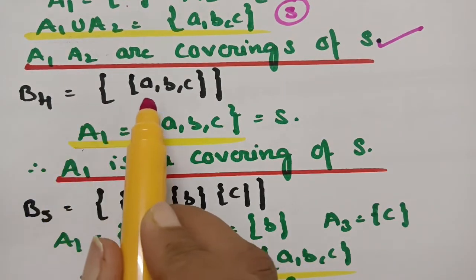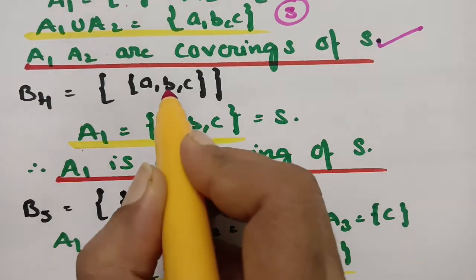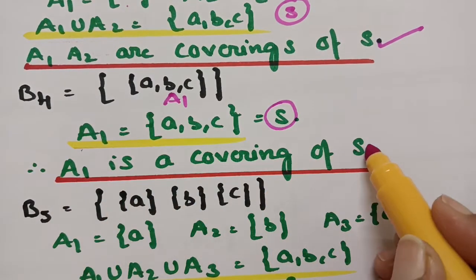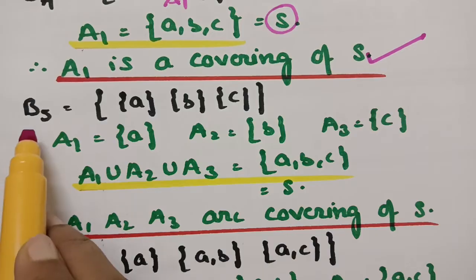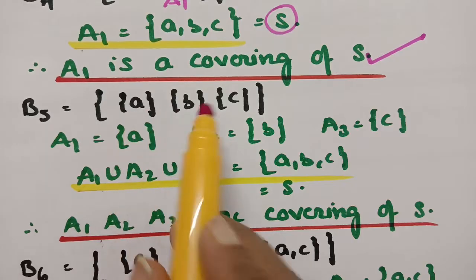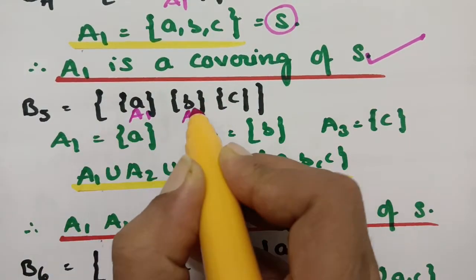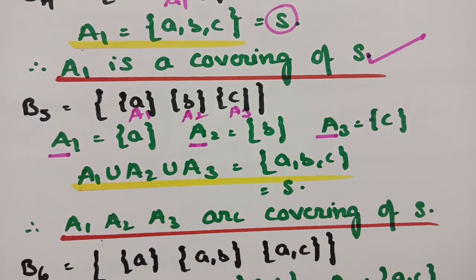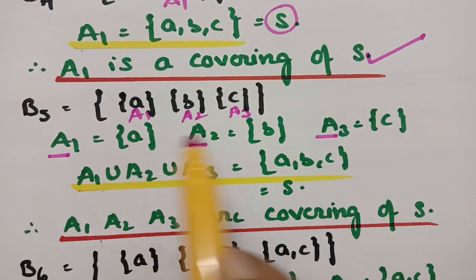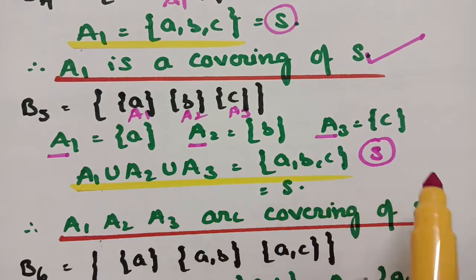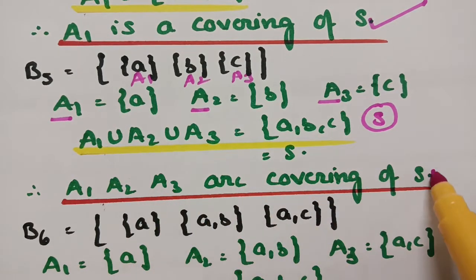Coming to B4: this is a single subset A1, which is clearly the main set S itself. Therefore A1 is a covering of S. For B5, we have singleton sets {A}, {B}, and {C}, named A1, A2, and A3. There can be common elements. Making their union gives {A, B, C}, which is nothing but the main set S. Therefore A1, A2, and A3 are the coverings of S.